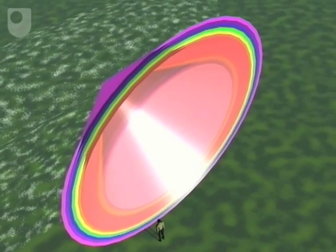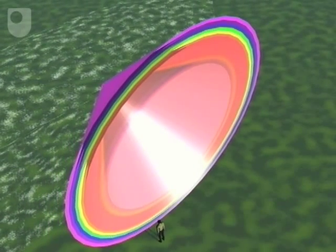This second set of cones being outside the first set means that the secondary bow is outside the primary. The second reflection also reverses the colour order of the rays.